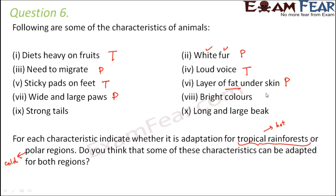Eighth: bright colors help with camouflage — animals can blend with the background color to catch prey and protect themselves from predators. This is for tropical rainforests. Ninth: strong tails help in climbing and making direction changes — also for tropical rainforests. Tenth: long and large beak, used by birds in rainforests for eating other organisms — another trait for tropical rainforests. None of these characteristics would suit both regions, since the climates are extreme opposites.